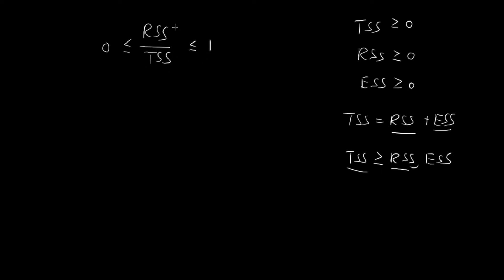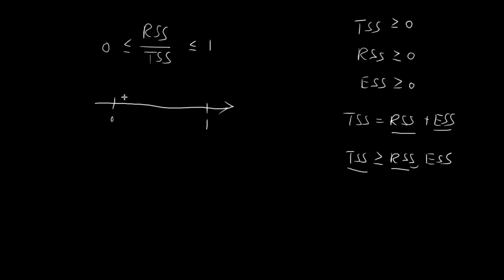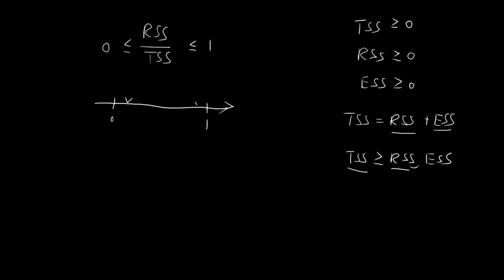So now you can see that I've defined this number that always lies between 0 and 1, and it is very helpful in determining whether this line is a good fit or not. If our RSS is very small — indicating a good fit — then this term RSS/TSS will be very close to 0. And if our RSS is very big, it will have a value close to 1, indicating a bad fit. So for this term, the closer it is to 0, the better the fit; the closer it is to 1, the worse the fit.